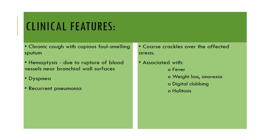Clinical features include chronic cough with copious foul-smelling sputum, hemoptysis due to rupture of blood vessels near bronchial wall surfaces, dyspnea, recurrent pneumonia, and crackles over the affected areas. Associated features are fever, weight loss, anorexia, finger clubbing, and halitosis.